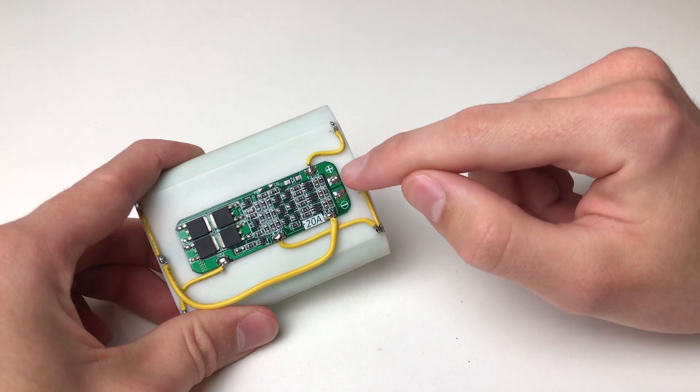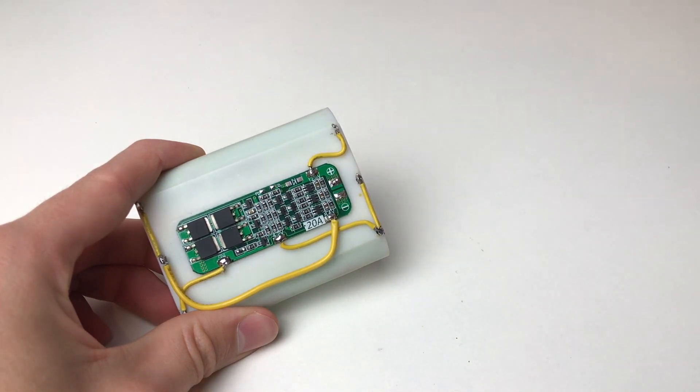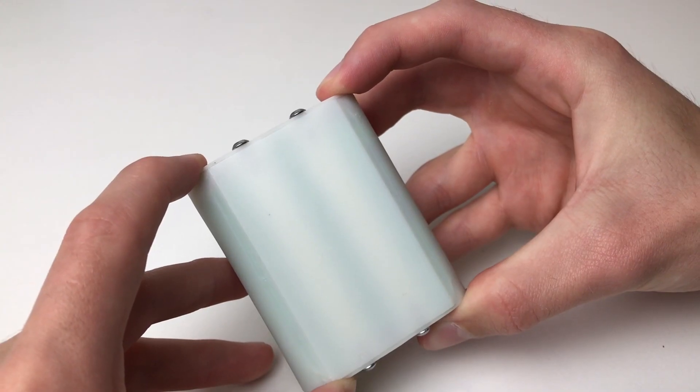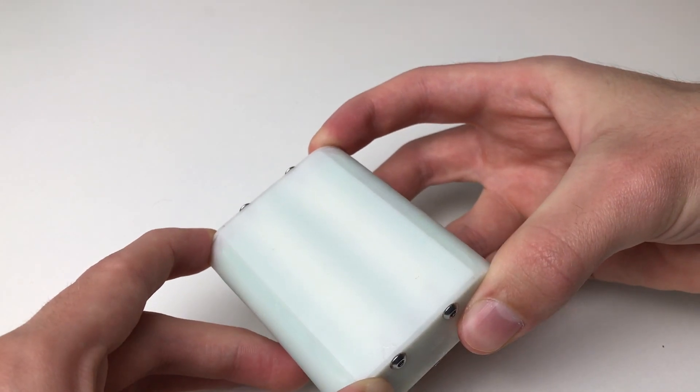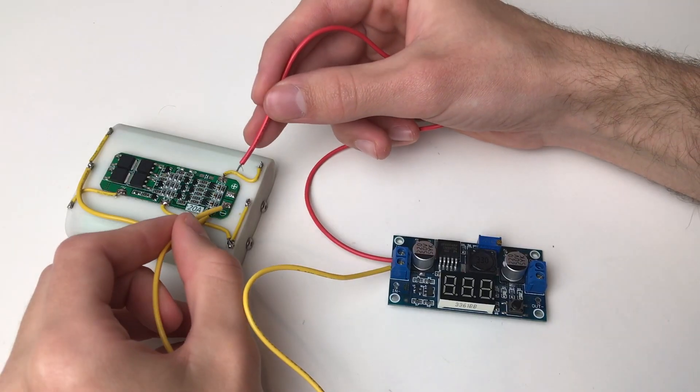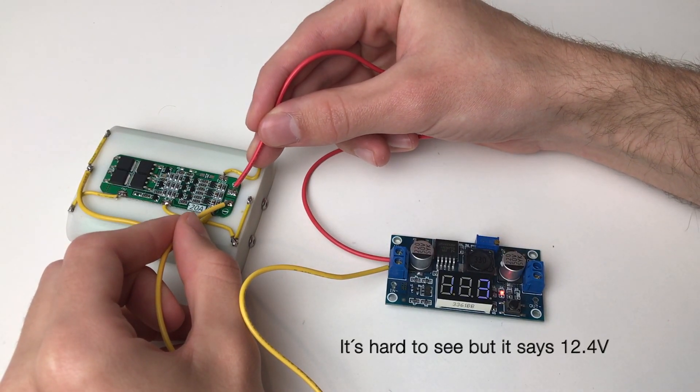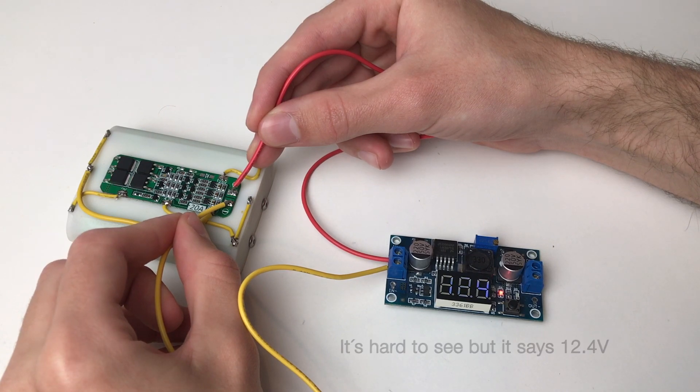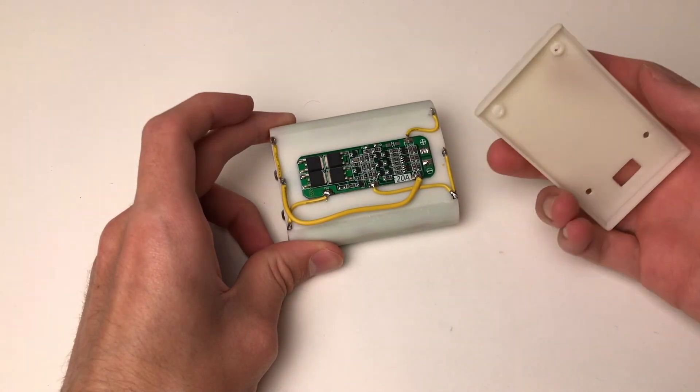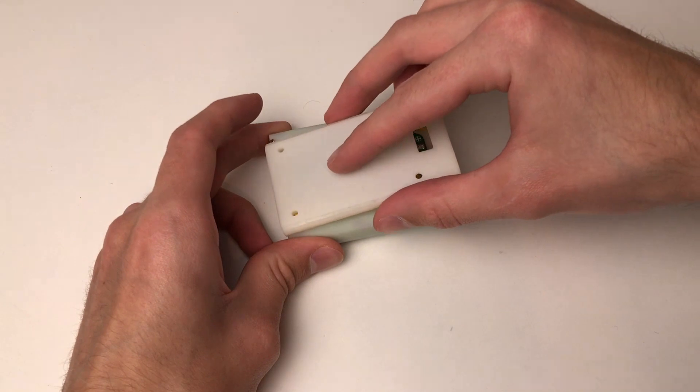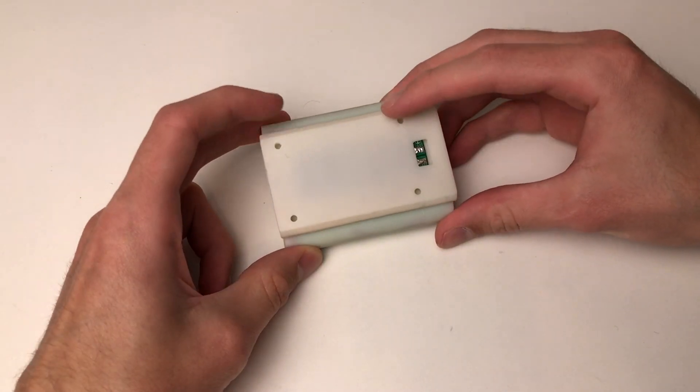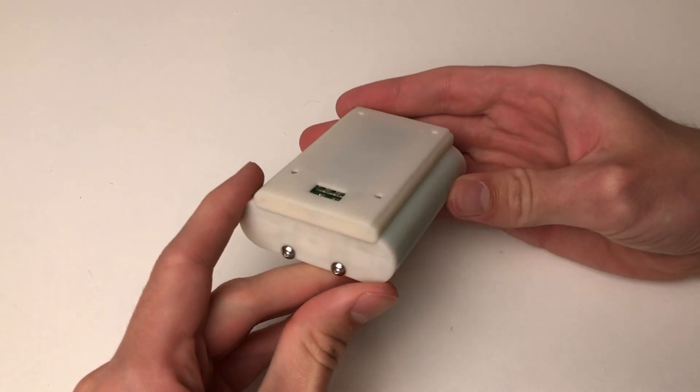Over these two contacts you can charge and discharge the battery. Here you can see a cover I designed to protect the BMS and the contacts and to have a place to screw things to, for example a Bluetooth amplifier board.